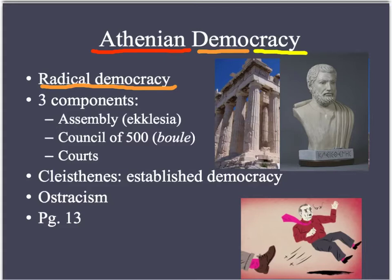The leader of the Bule for the day was selected by lot — basically a lottery, random selection — which was seen as very fair. There's evidence that one quarter of citizens might have been president of the Bule at some point because it rotated every day. Their main job was to prepare the agenda for the Ekklesia, and they were located just down the hill from the Pnyx.